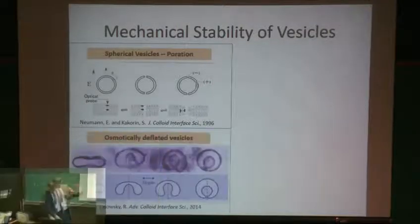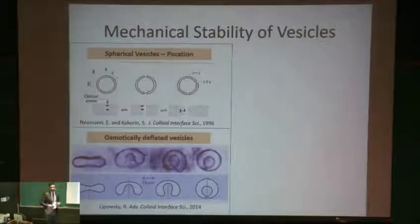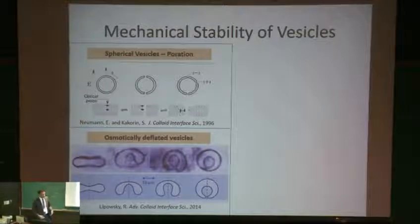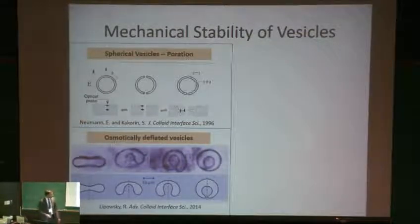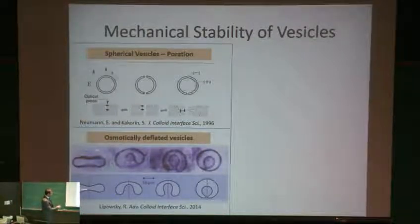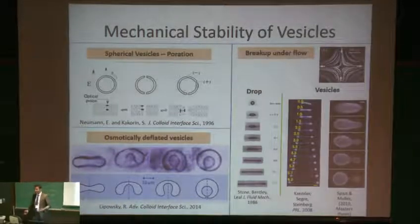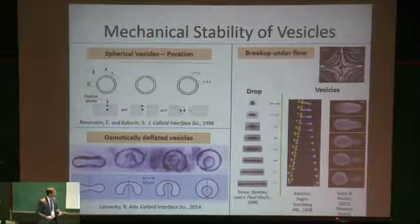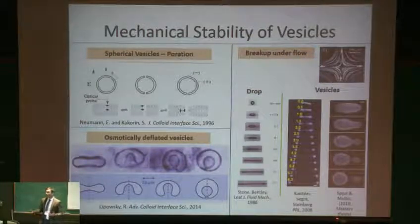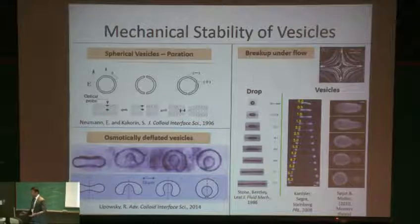Vesicles do not necessarily have to be spherical. If they're placed in a chemically different environment where they can be osmotically deflated, they can become very floppy and exhibit a wide range of shapes — like a floppy shape, or more stomatocyte-like shapes. When these floppy osmotically deflated vesicles are placed in flow, they deform in ways that look very similar to droplets, but there are still important qualitative differences.